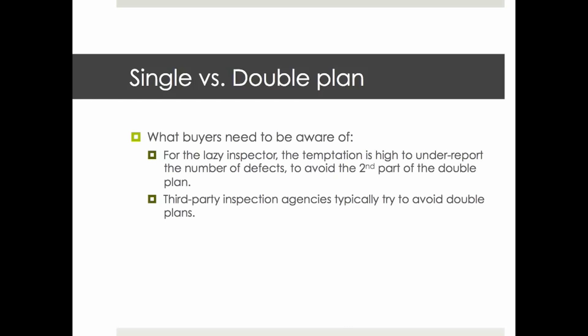The conclusion for buyers: be careful with double plans. There's a temptation for a lazy inspector to under-report the number of defects and declare the batch good so they don't need to proceed to the second sampling step. Also, it's hard to predict the amount of work in advance. That's why third-party inspection agencies usually try to avoid anything other than a single sampling plan.